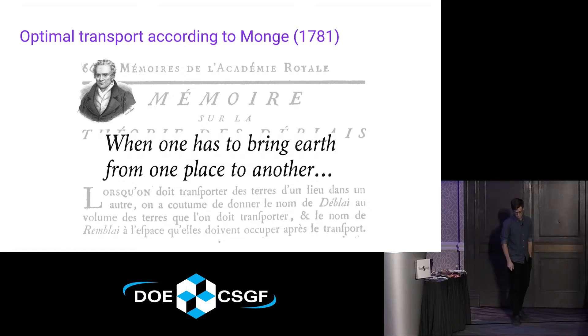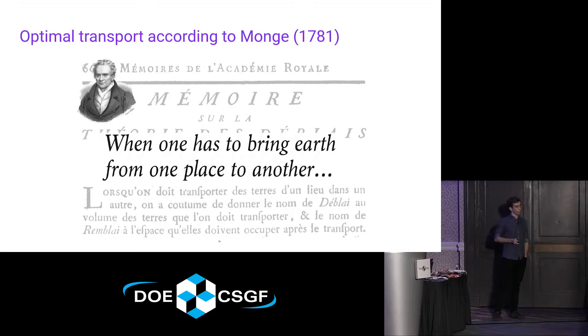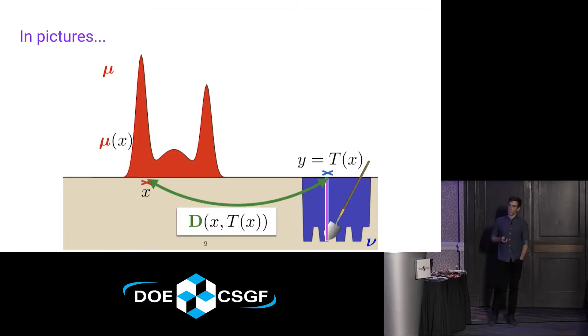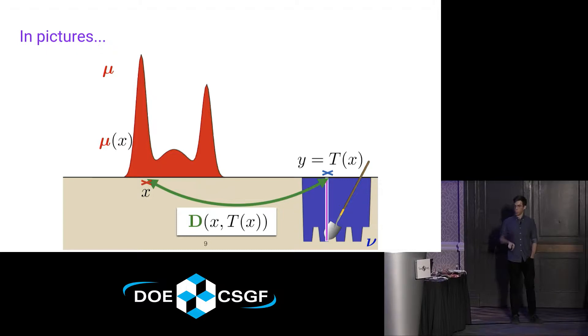Optimal transport is actually quite old — it dates back to Monge. He had probably the most elegant way of describing it in a sentence, which is just moving Earth from one place to another. Another way to describe it in pictures is you've got two distributions, mu and nu, and you'd like to move the mass of nu into mu. You've got a shovel, and you'd like to move from y to x, or from x to t of x. The problem Monge considered was computing t of x: what is this map that gives us an optimal way to move from mu to nu?